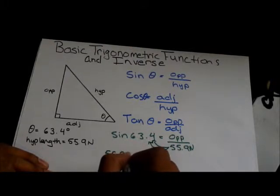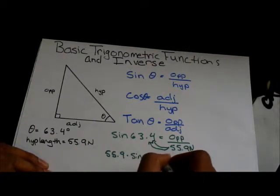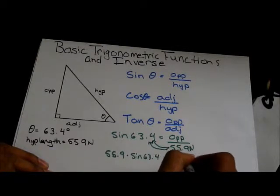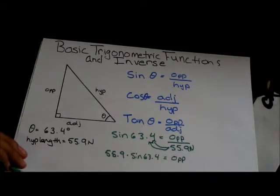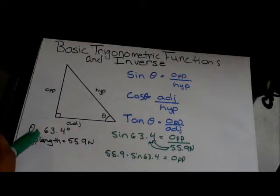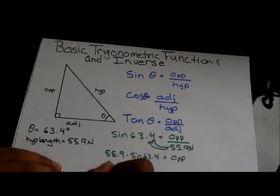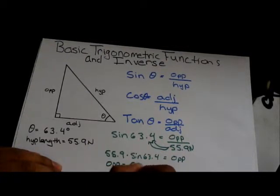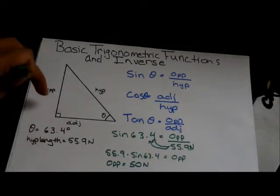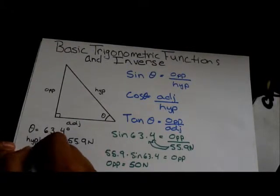So, carry this over. 55.9 multiplied by sine 63.4. This is equal to our opposite length. So, if we do all the calculations, sine 63.4 times 55.9. This gives us 49.98. We could round that to opposite length. We could round that to 50 newtons. These lengths will never be longer than the hypotenuse.